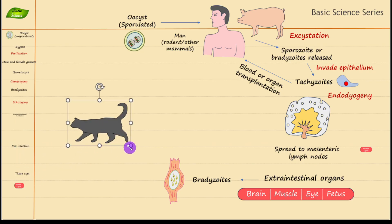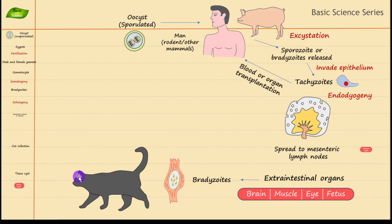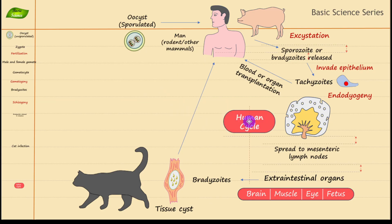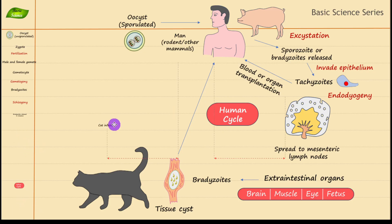This conversion into tissue cysts is happening inside the intermediate host. Now another cycle is running — the cat can get infected through tissue cysts, and humans can also get infection through tissue cysts in their food chain. Everything we have discussed up to here is part of the human cycle, where humans are the intermediate host.